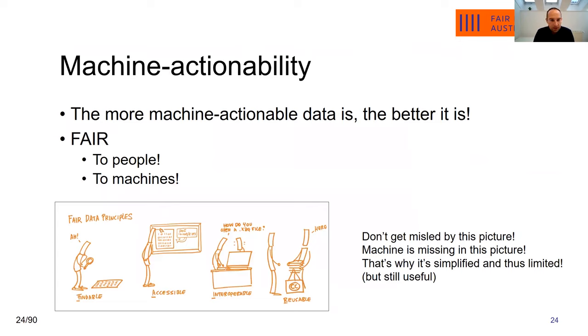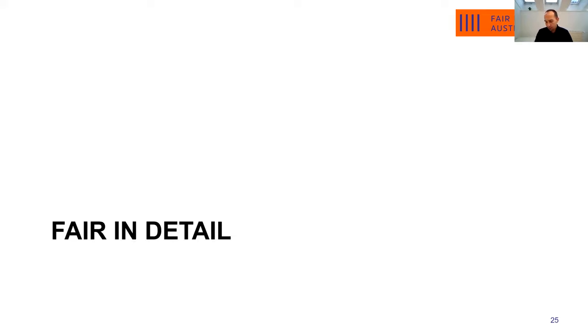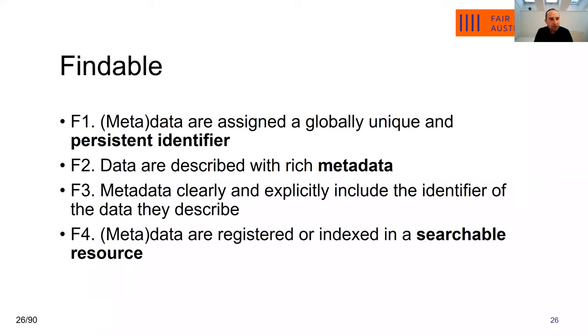As a summary for this part: making data FAIR means making it fair to people and also to machines. The more machine actionable data is, the better — the easier it is to analyze, interpret, and reuse. The picture shown in the beginning with the simplified view of FAIR principles was focusing only on the human aspect. You cannot only perceive FAIR principles as making things fair for people — remember also about the machines.